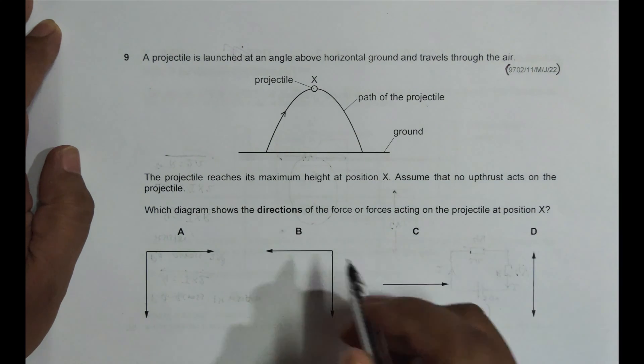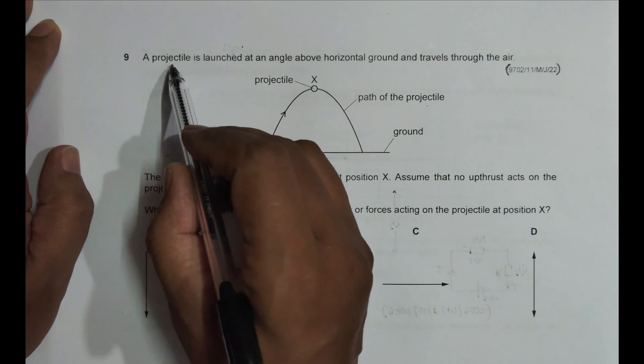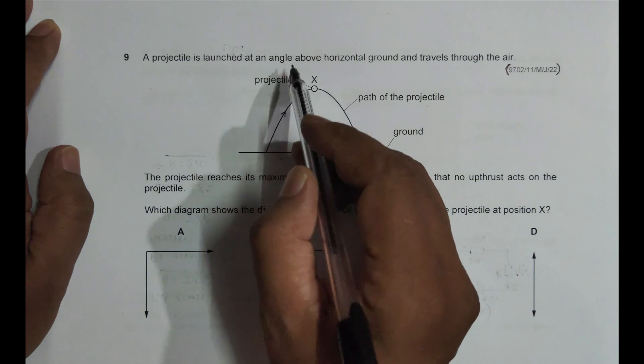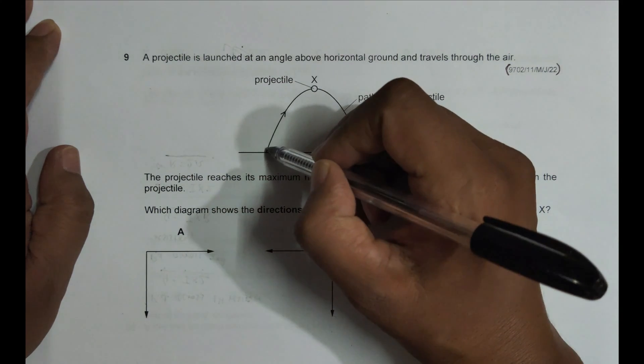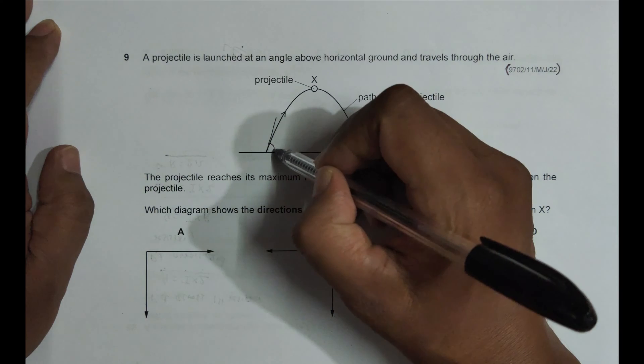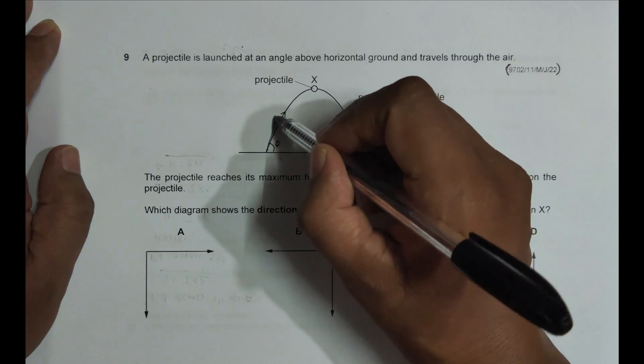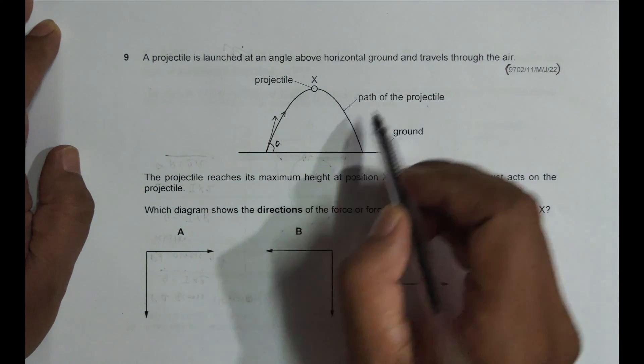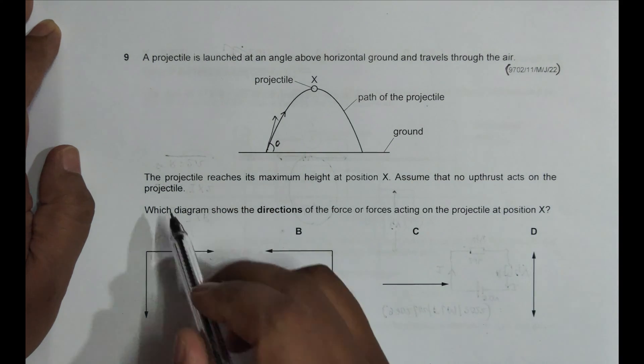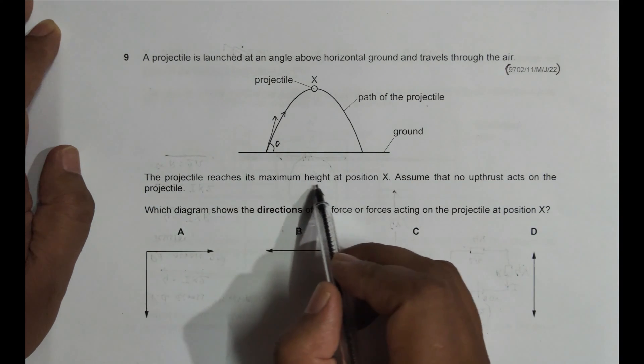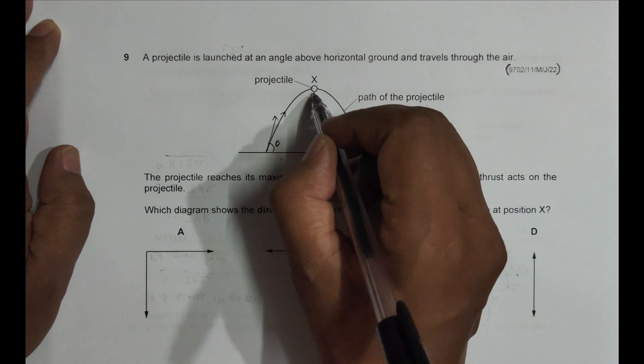It says that a projectile is launched at an angle above the horizontal ground, so here we have the angle theta above the horizontal ground, and travels through the air. The projectile reaches its maximum height at position X.